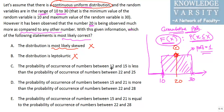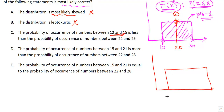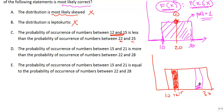They ask about the probability of occurrence of a number between 12 and 15. If you look at the distribution from 10 to 30, the probability of occurrence between 12 and 15 is given by that area. Similarly, the probability between 22 and 25 is given by that corresponding area. The area represents the probability.